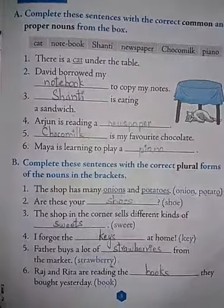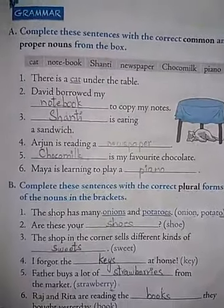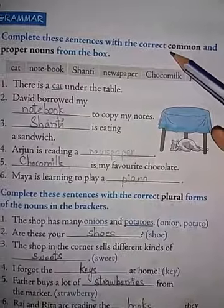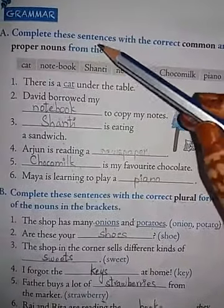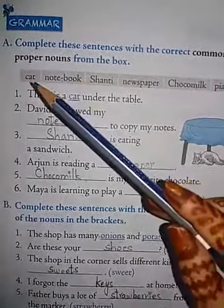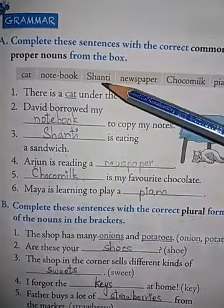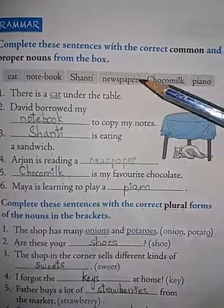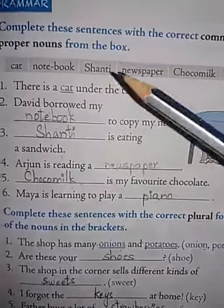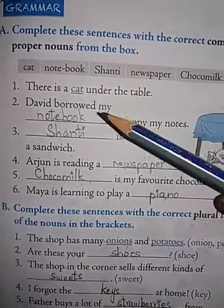A bit is of grammar. Take out page number 3, children. Complete these sentences with the correct common and proper nouns from the box. Here is the help box: cat, notebook, Shanti, newspaper, Chocomilk, and piano. So you have to select the correct common and proper nouns.